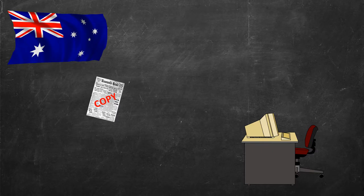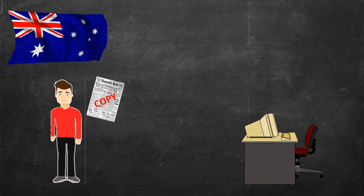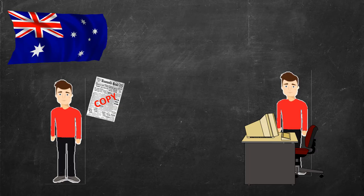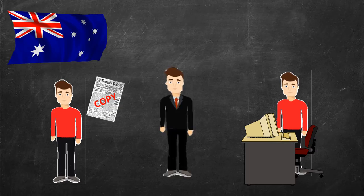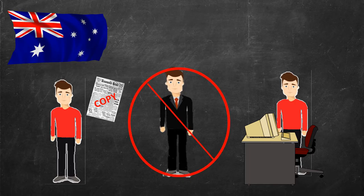This case created an important precedent in Australia as it determined that the exception in Section 40 only applies if the person doing the copying is the person doing the research or study. One person cannot exercise a fair dealing exception on behalf of another. Effectively, there cannot be a third-party intermediary to assist with copying. This resulted in a narrow judicial interpretation of the fair dealing exception.